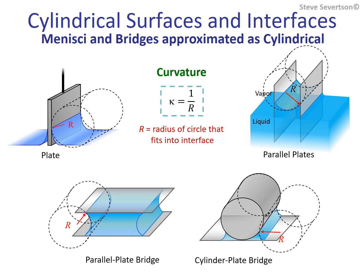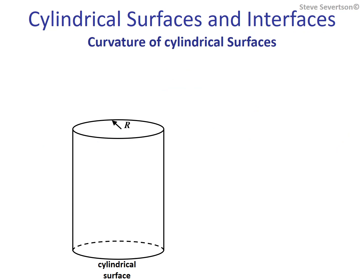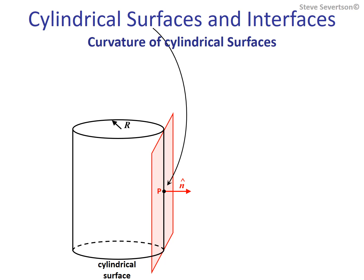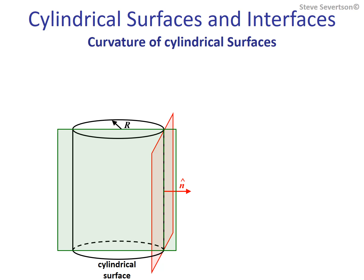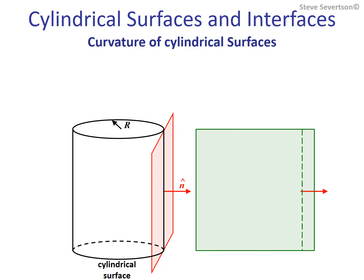Let's begin with a schematic description for finding curvature values for a cylindrical shape. The first step is to identify the point of interest P and place our unit normal there, which defines the tangent plane. The choice of a point placed on the curved surface of the cylinder is irrelevant because the curvature is constant across the entire surface, neglecting the ends of the cylinder.